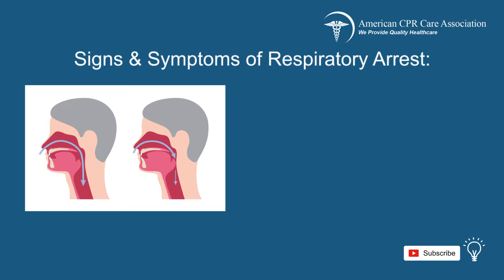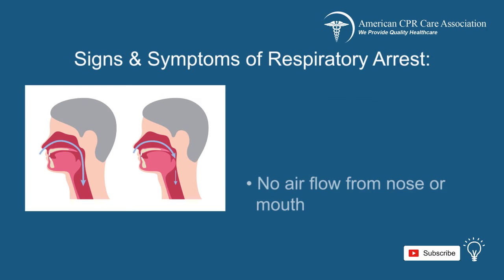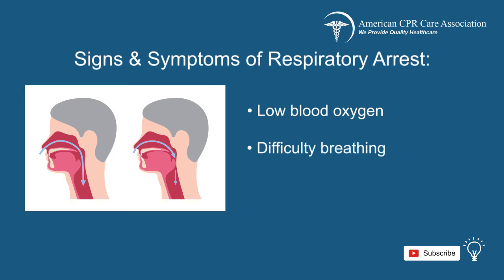Some signs and symptoms of respiratory arrest include difficulty when breathing, such as stridor, or when something obstructs your windpipe or larynx, wheezing, or other breathing problems, as well as loss of consciousness, cyanosis or blue coloration of skin, no passage of air from the nose or mouth, low levels of oxygen in your blood, complaints of difficulty in breathing, and no chest rise and fall.